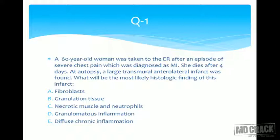Let's look at the first question. It's about a 60-year-old woman who had chest pain, was diagnosed with MI, and died after four days. At autopsy, they found a transmural infarct and they're asking: what would be the most likely histologic finding? Two important clues — chest pain, MI, and the histologic finding after four days.